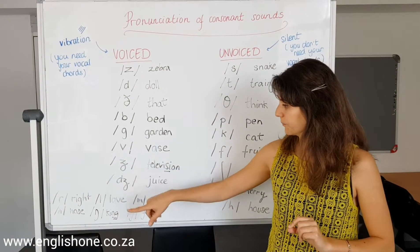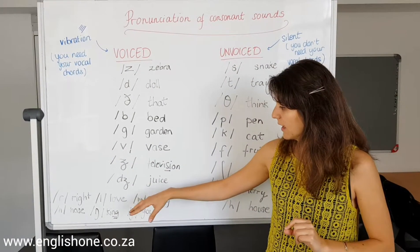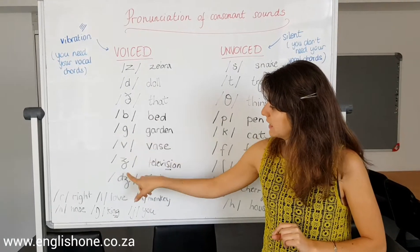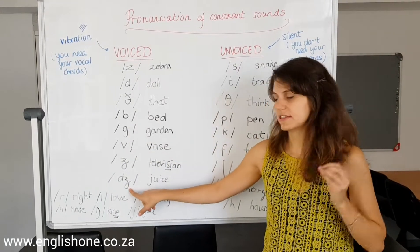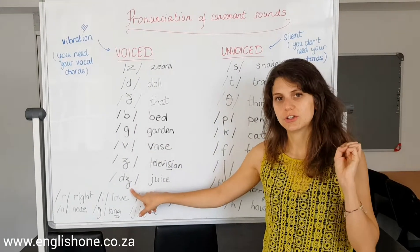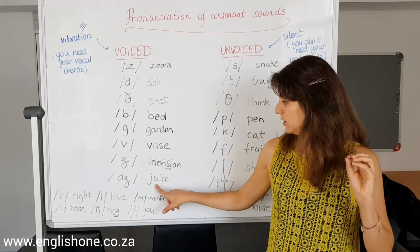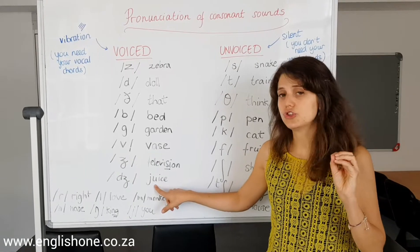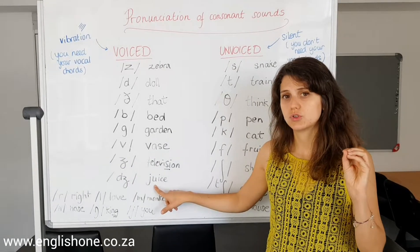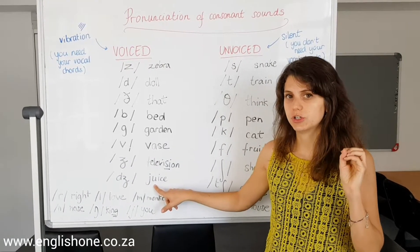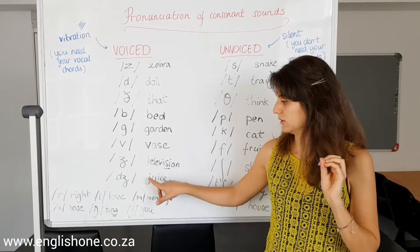And then if I put the D and J together, that's the J sound — like 'juice,' or 'judge,' 'jazz.'